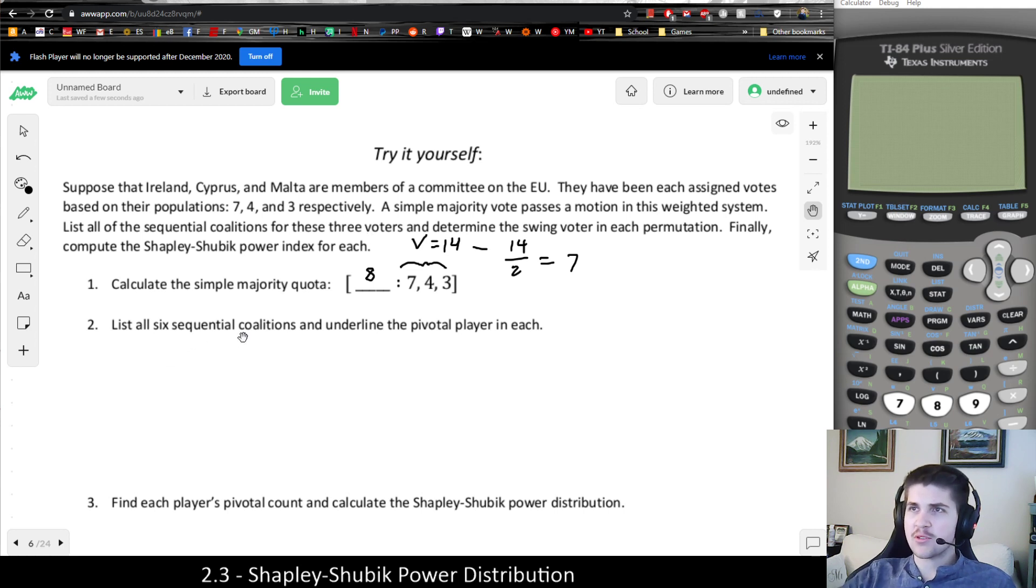It says list all six sequential coalitions and underline the pivotal player. So in this case, to do the Shapley-Shubik, we need to find all of the bracketed permutations. Again, we can start with the coalition of everybody, but now we need to focus on the order. And we don't take subgroups, we just do the full list of each order. So if I start with 7, I could either go 7, 4, 3, or 7, 3, 4. That's the only possible ways of starting with 7 when there's only three players.